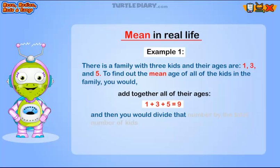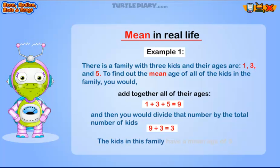And then you would divide that number by the total number of kids. Nine divided by three equals three. The kids in this family have a mean age of three.